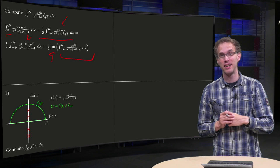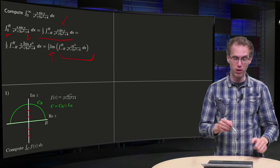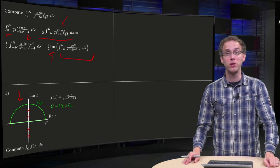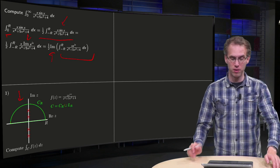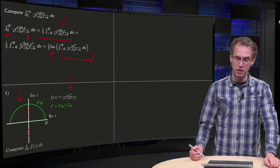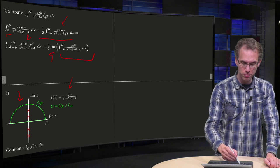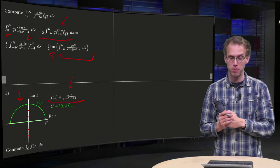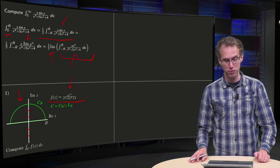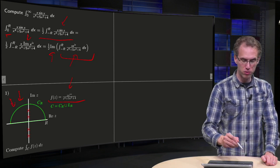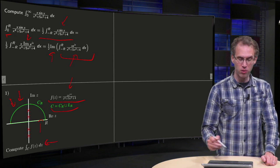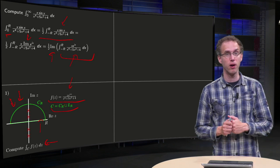Why do we do that? Because with e to the power ix, if we are going in the upper half plane, this e to the power iz will not blow up. So we define f(z) as z times e to the power iz divided by z to the power 4 plus 5z squared plus 4. We have our contour consisting of C_r and L_r, and we want to compute the integral of f along c.